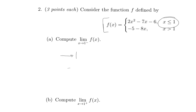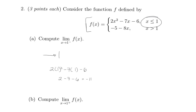So that would be 2 times 1 squared minus 7 times 1 minus 6. Evaluating that gives us 2 minus 7 minus 6, which has a value of negative 11. So the limit as x approaches 1 from the left of f of x is equal to negative 11.